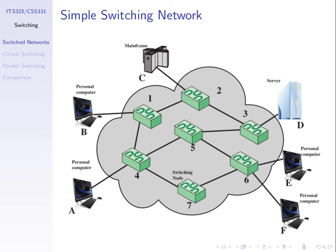What if we have a hundred computers? How many cables do you need? The first computer needs ninety-nine cables. The second already connects to the first, so it needs another ninety-eight, and so on. That's about five thousand cables — one hundred times ninety-nine divided by two. With a hundred computers, each needing ninety-nine cables plugged in, it's not possible, not feasible. Growing to a thousand users, you'd need five hundred thousand cables. So we don't connect end stations directly to everyone else.